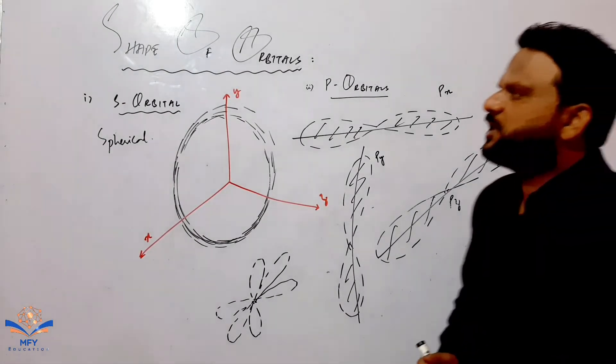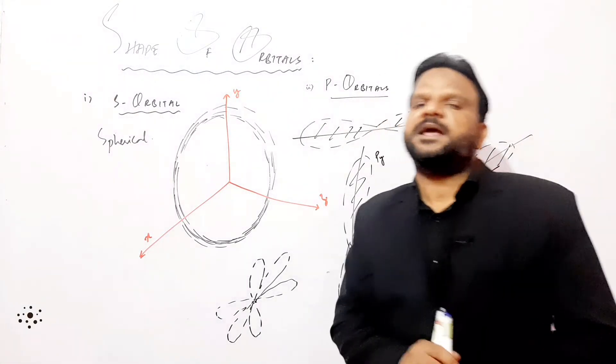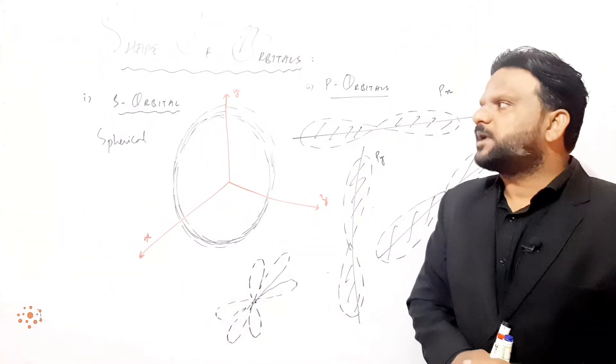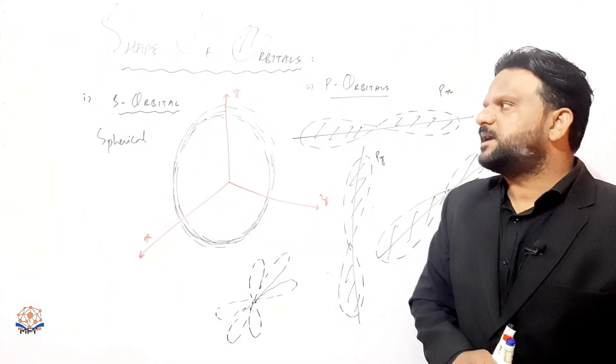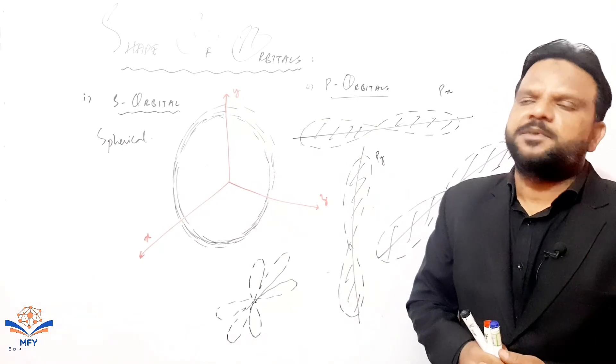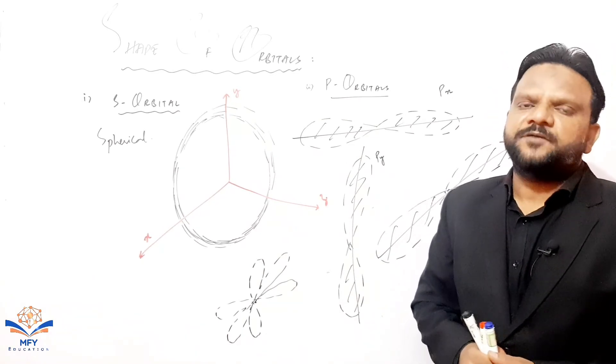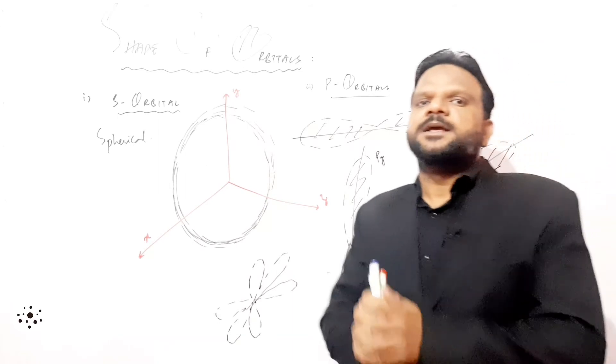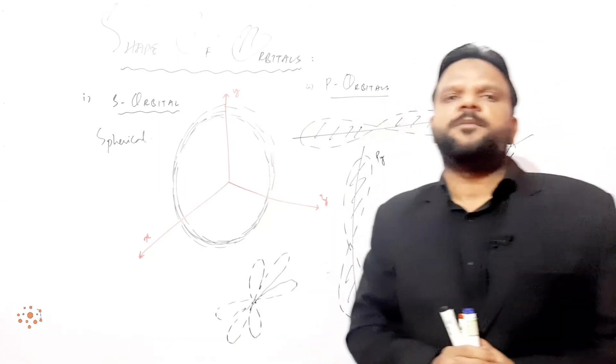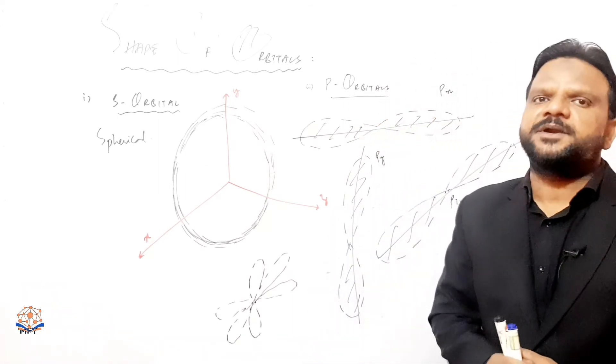Hope you can easily draw or easily understand the s and p orbital structure or shape. If you have any query regarding understanding the s and p orbital shape of orbitals, you can directly comment or message me.